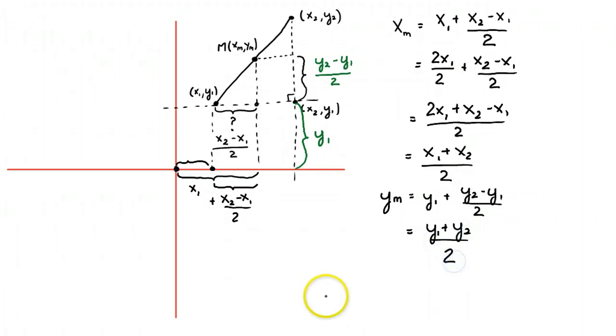And now we have the midpoint formula. And the midpoint formula is x1 plus x2 over 2, y1 plus y2 over 2. And that is where the midpoint formula comes from.